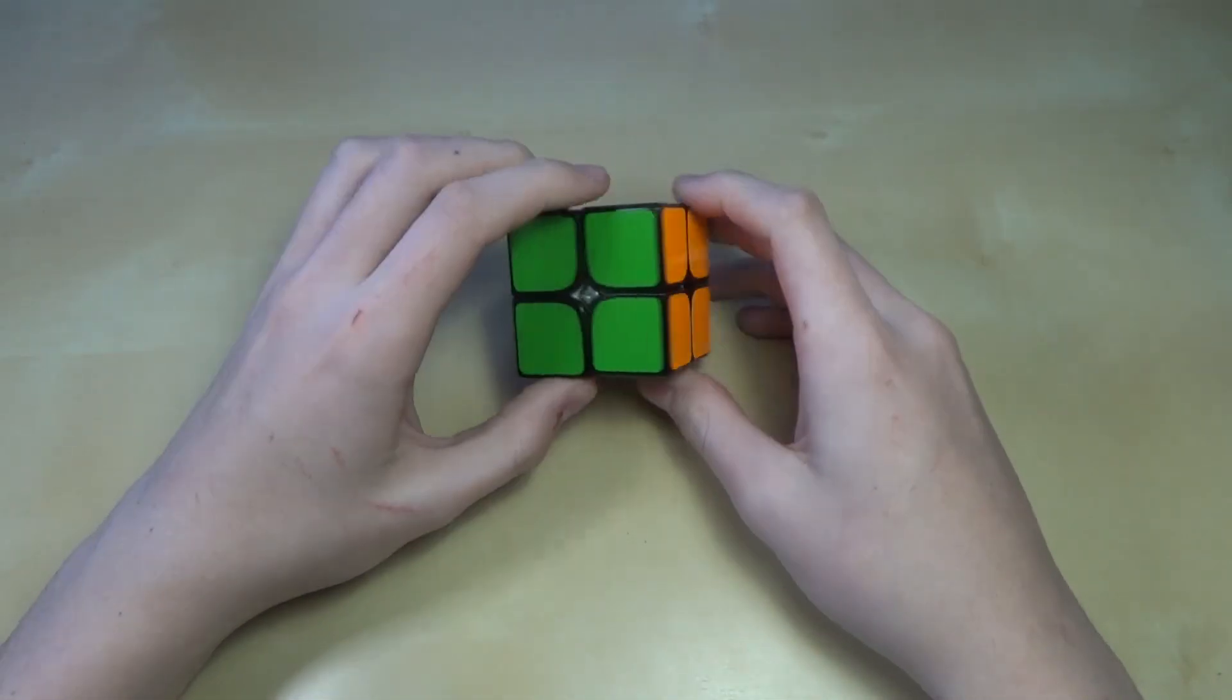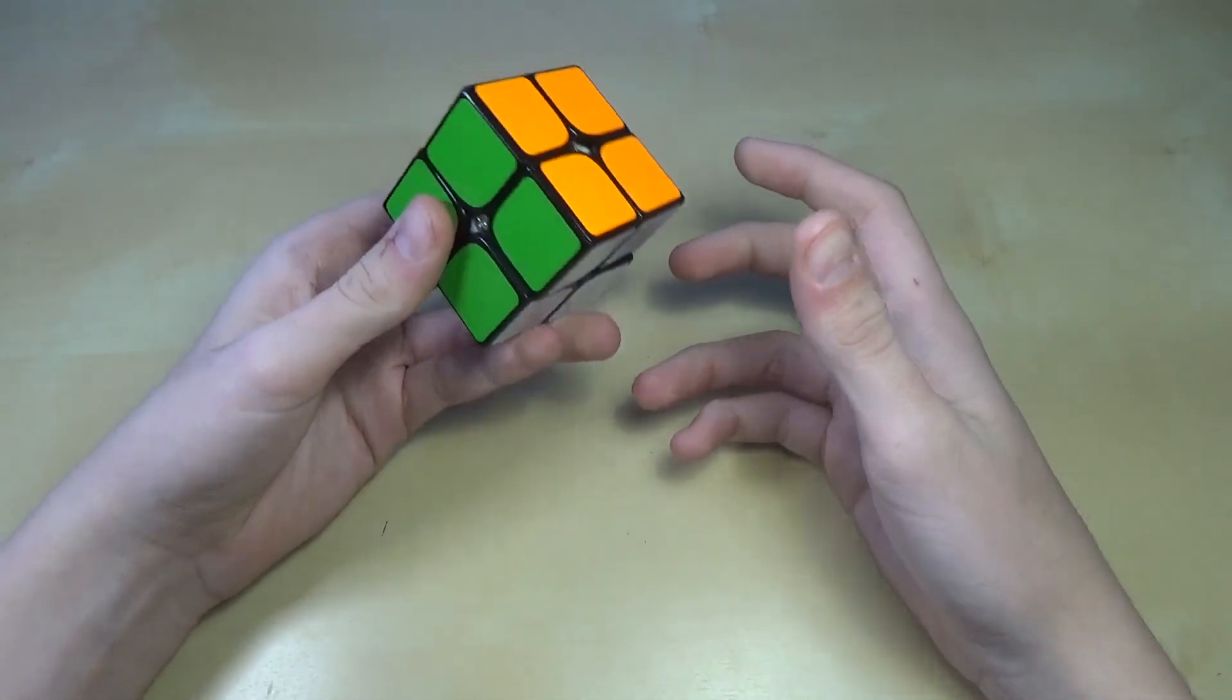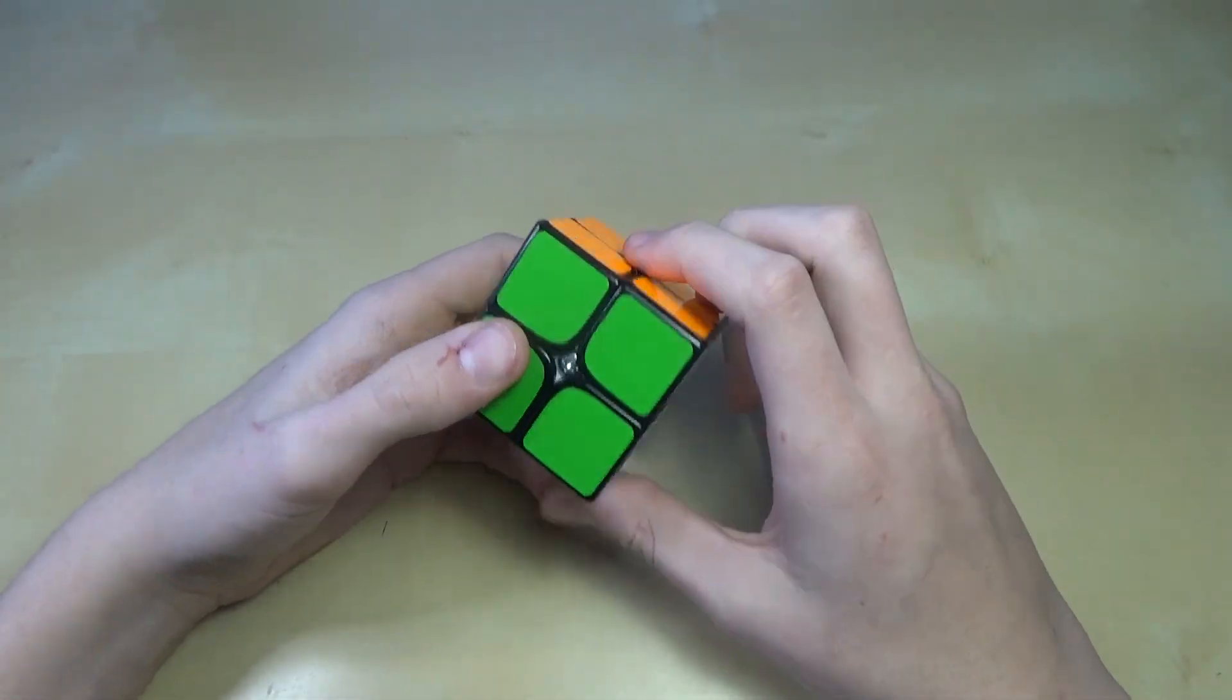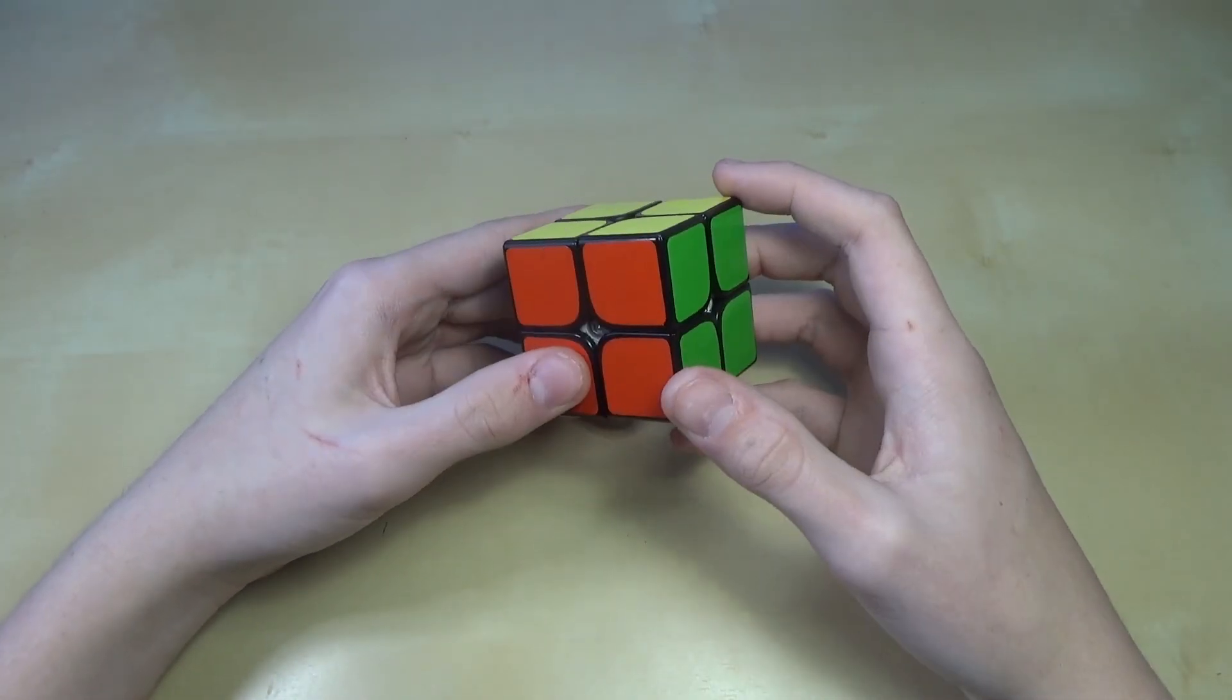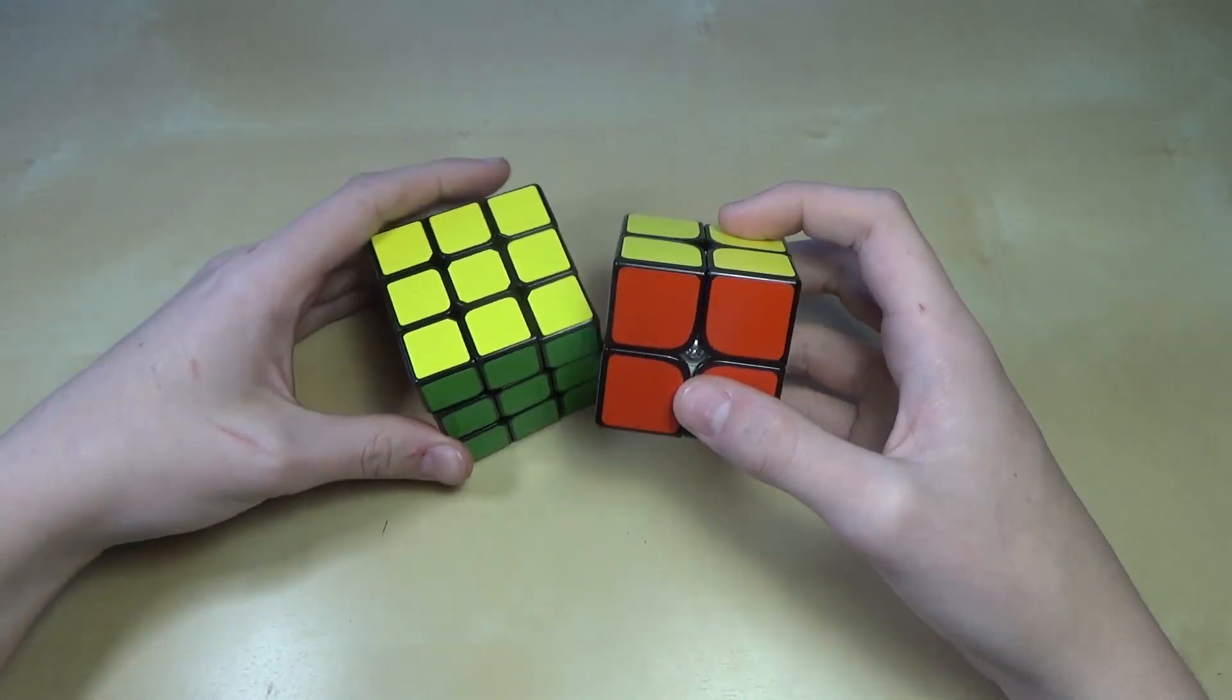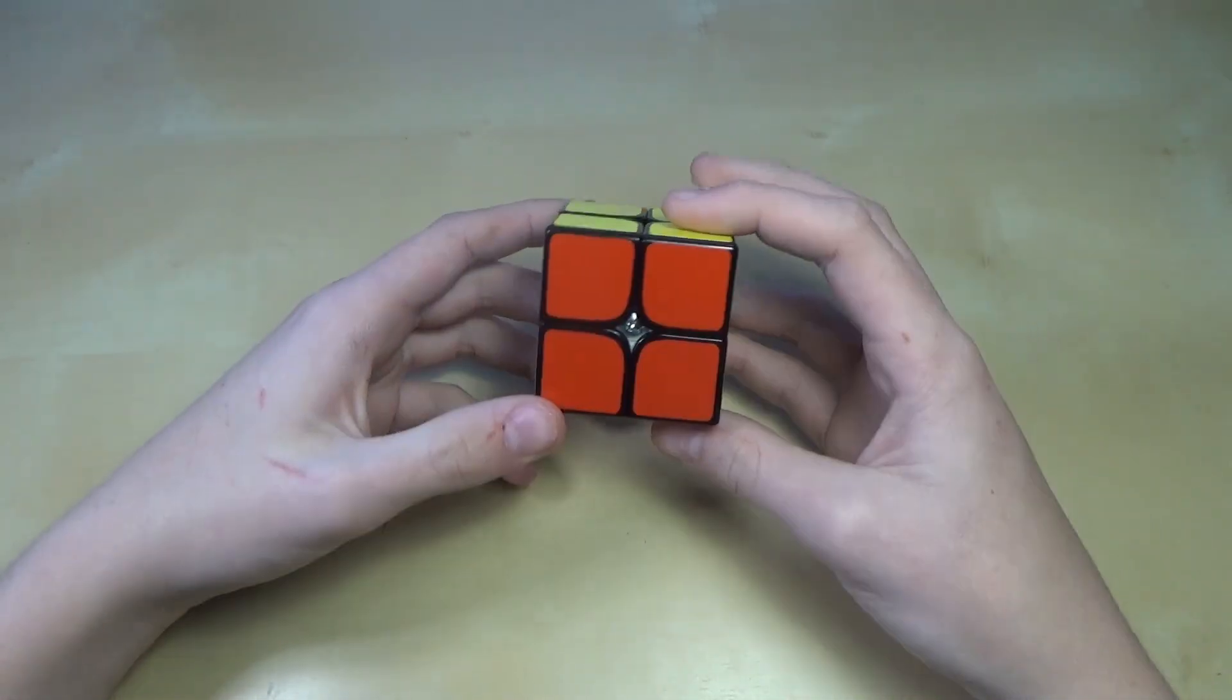And there we go. We have our 2x2 solved. And that's just the basic beginner's method of the 2x2. It's a little bit more complex like I said. Most people don't know this. But if you know that one last algorithm, it will really help you a lot in the long run. And the benefit of it is it actually makes learning the next method on the 2x2 and the next method that you'll learn on the 3x3 a little bit easier. Plus you'll be faster in general. So it's just a good thing to do.